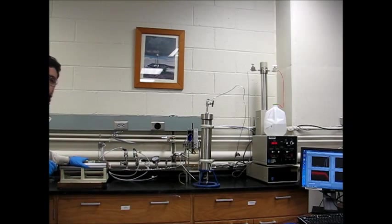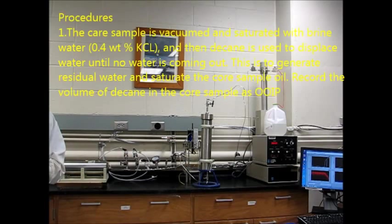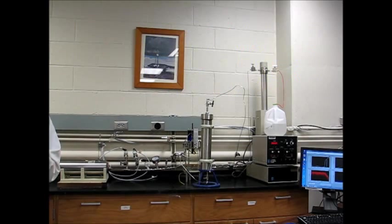Now, after putting the core sample inside the core holder, we will start the procedure of our experiment. First, the core sample is vacuumed, then saturated with brine water, which is 0.4 weight percent KCl. And then, decan is used to displace the water until no water is coming out. This has generated residual water and saturated the core sample with oil. Recording the volume of the decan inside the core, that will give us the original oil in place.